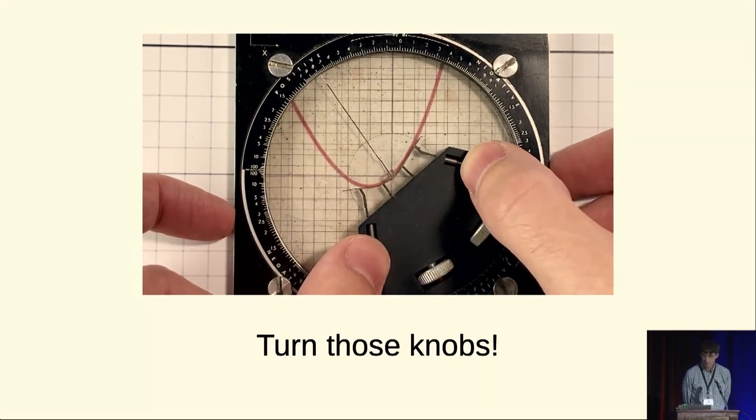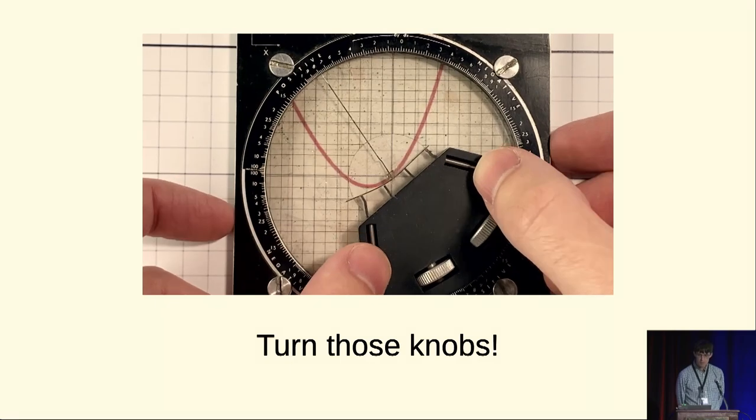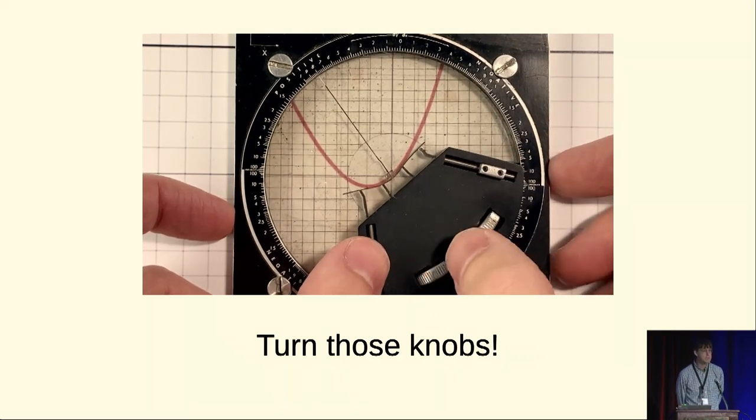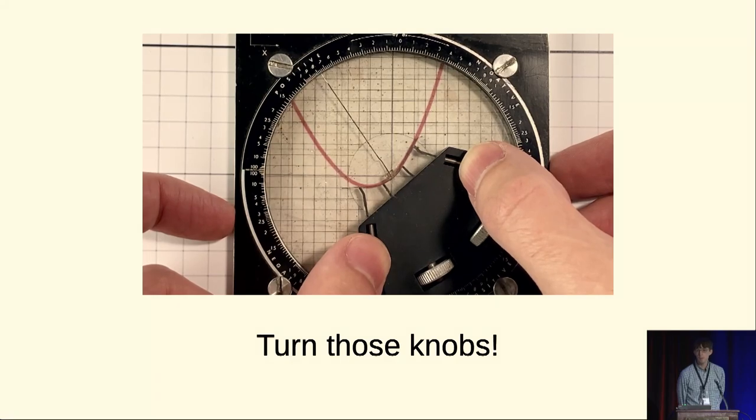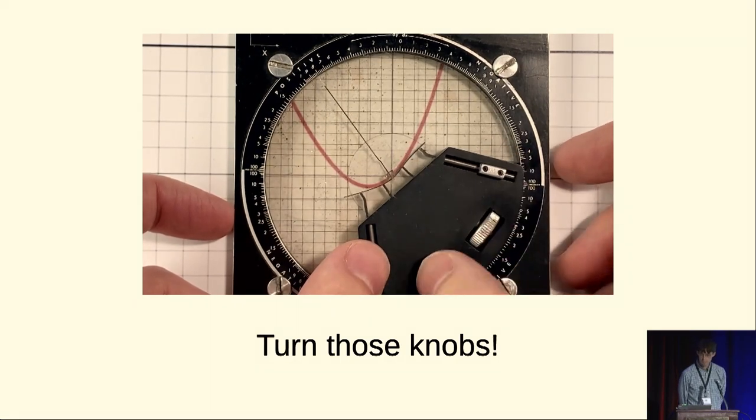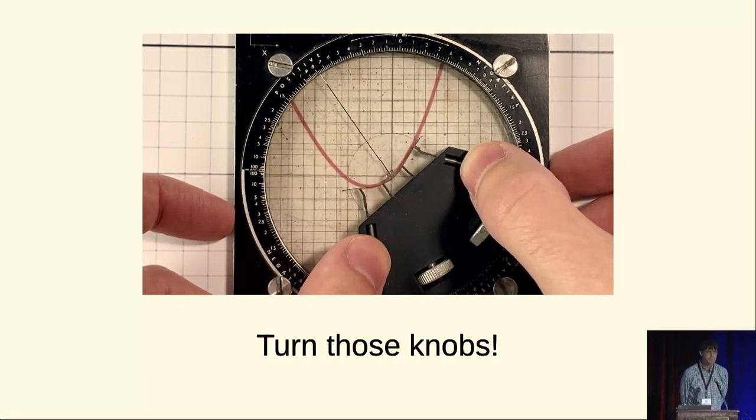You can bend the bar there and as you bend the bar you'll see the pointer is also tuning finely to get quite an accurate measurement of the derivative at a certain point. Very simple.